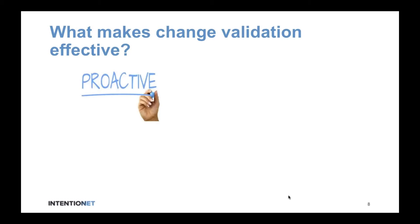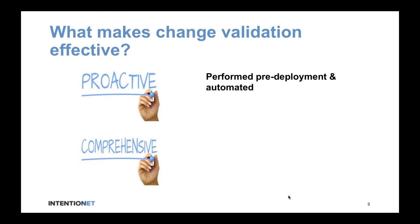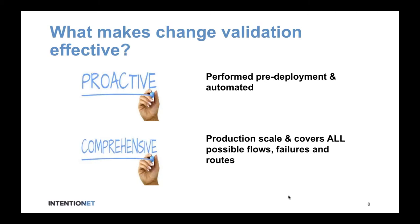So what makes change validation effective? We see two broad attributes. First, it is proactive — meaning you can perform it before deployment of any change to the network, and it happens automatically and continuously. Second, it's comprehensive — meaning it meets production scale and it covers all possible flows, failures, and routes.